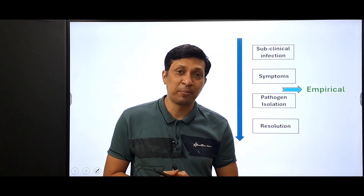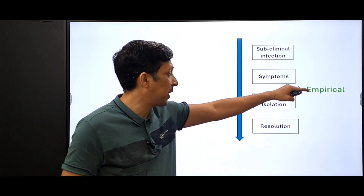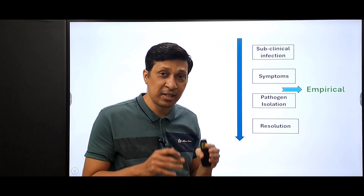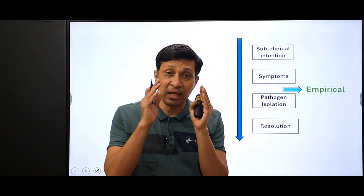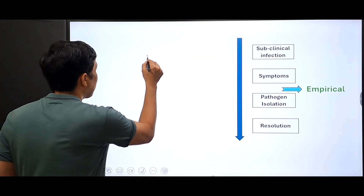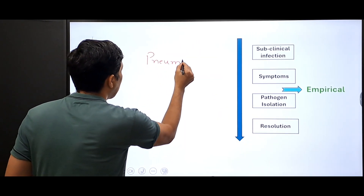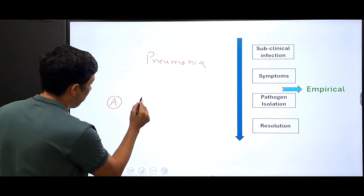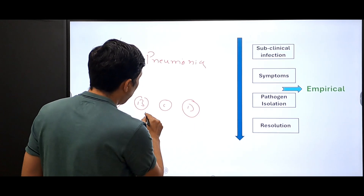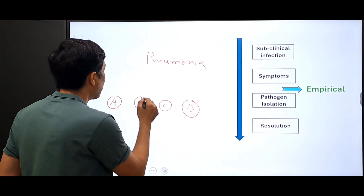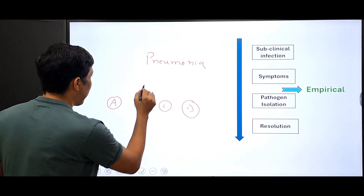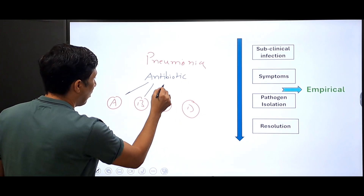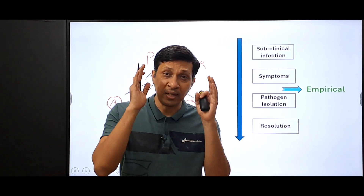The third type, which is very commonly used, is empirical treatment. Here the infection has set in and started showing symptoms, but we have not yet isolated the exact pathogen. For example, if a patient comes with pneumonia, there are various bacteria that could be possible causes. So you start with an antibiotic or a combination of antibiotics that will cover all of them.